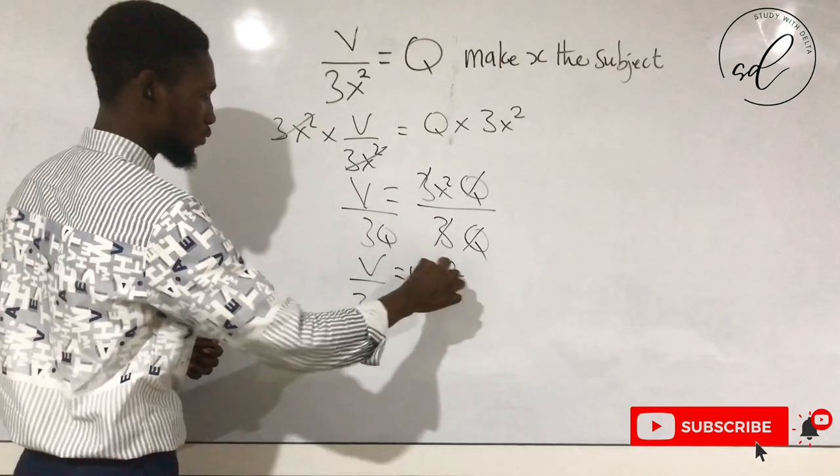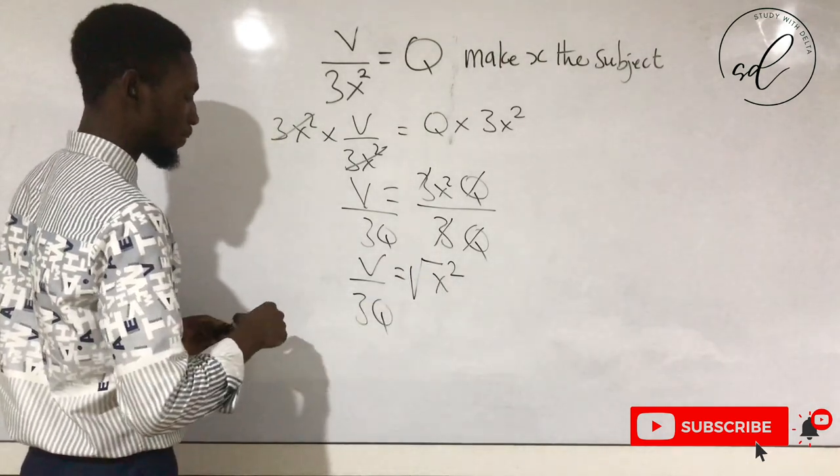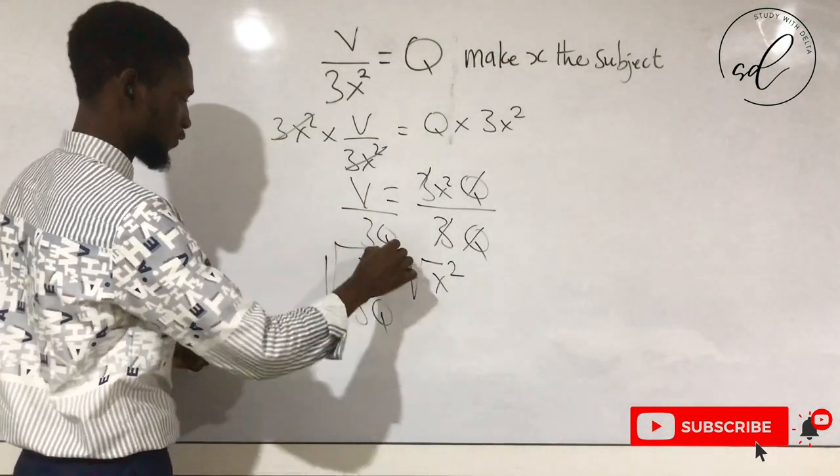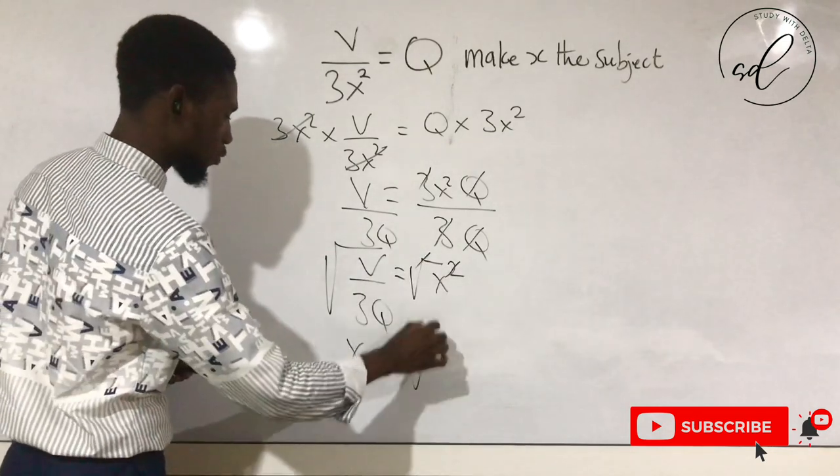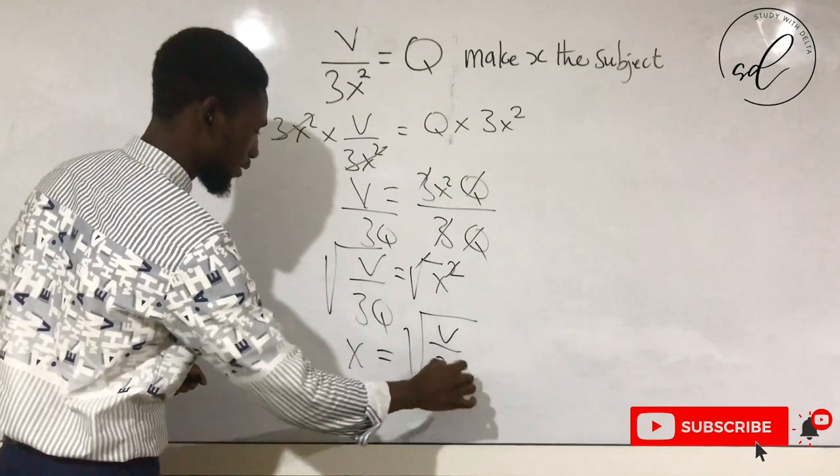So at this point we apply the square root. Taking the square root of both sides, our x becomes square root of V over 3Q.